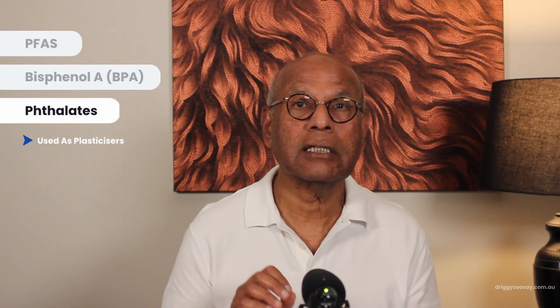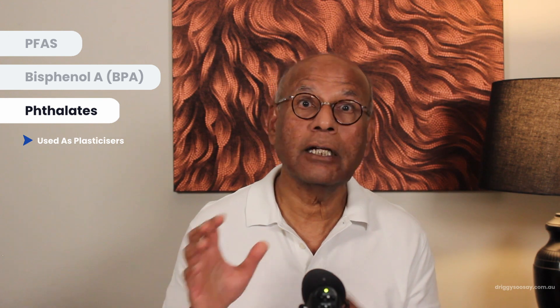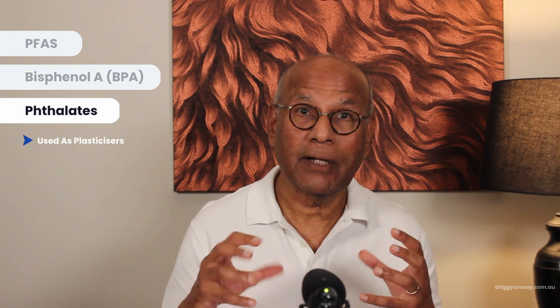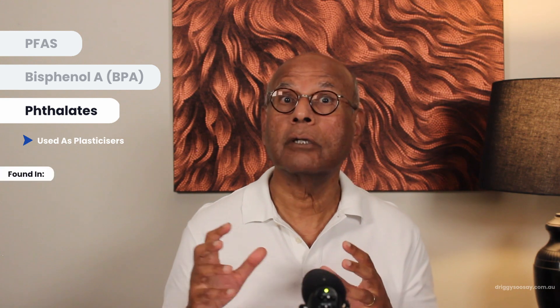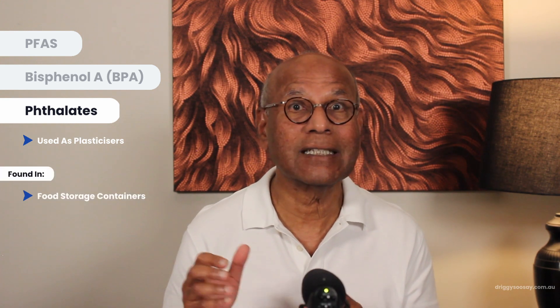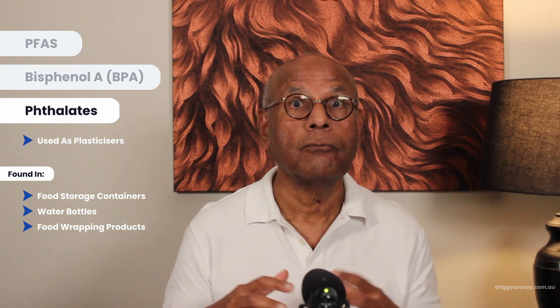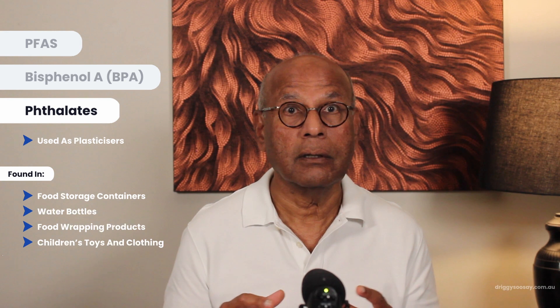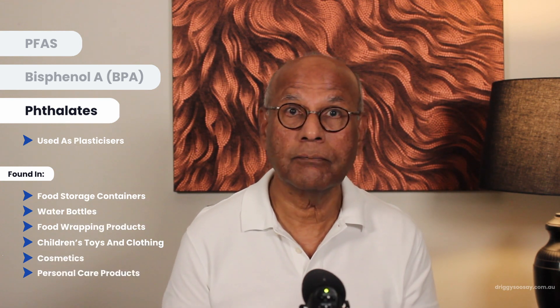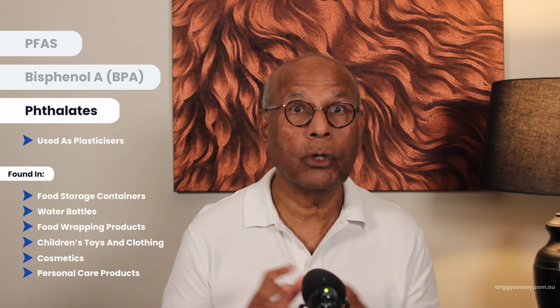The last group are the phthalates. Phthalates are used as plasticizers — that is, substances added to plastics to increase their flexibility and transparency. They are found in food storage containers including single and reusable water bottles, food wrapping products like Gladwrap or Clingwrap, children's toys, and clothing. They are also used in cosmetics and personal care products. Some of these products are water-soluble and can be found in drinking water. They are relatively stable in the environment, meaning they are not easily broken down, and so can accumulate.